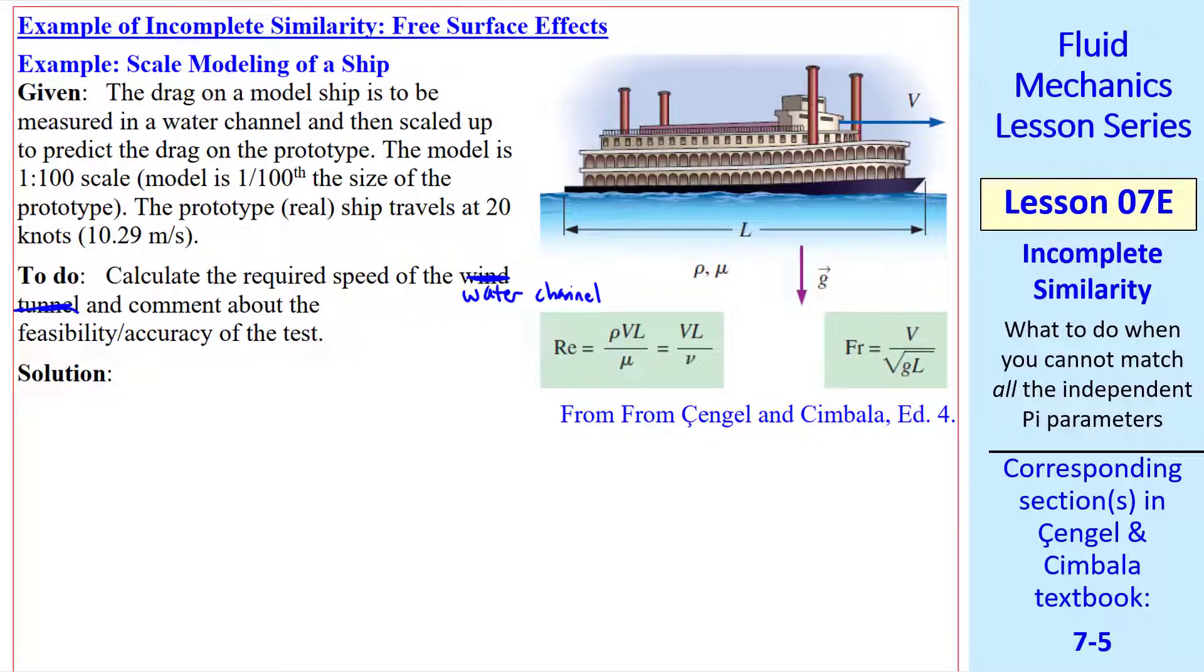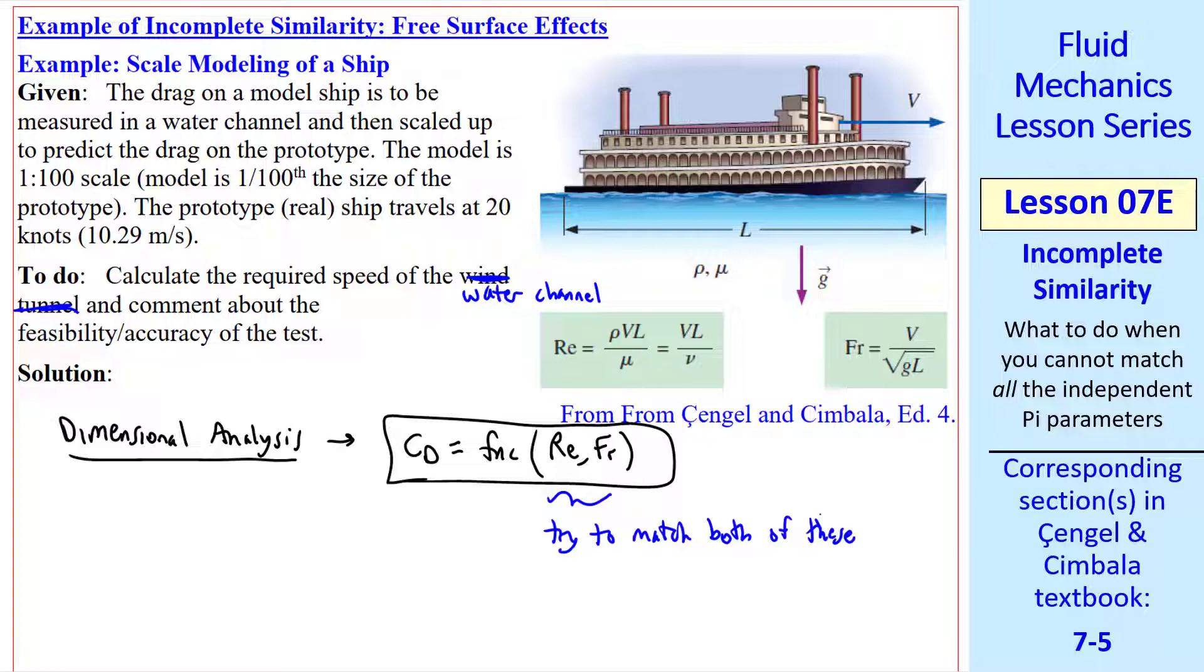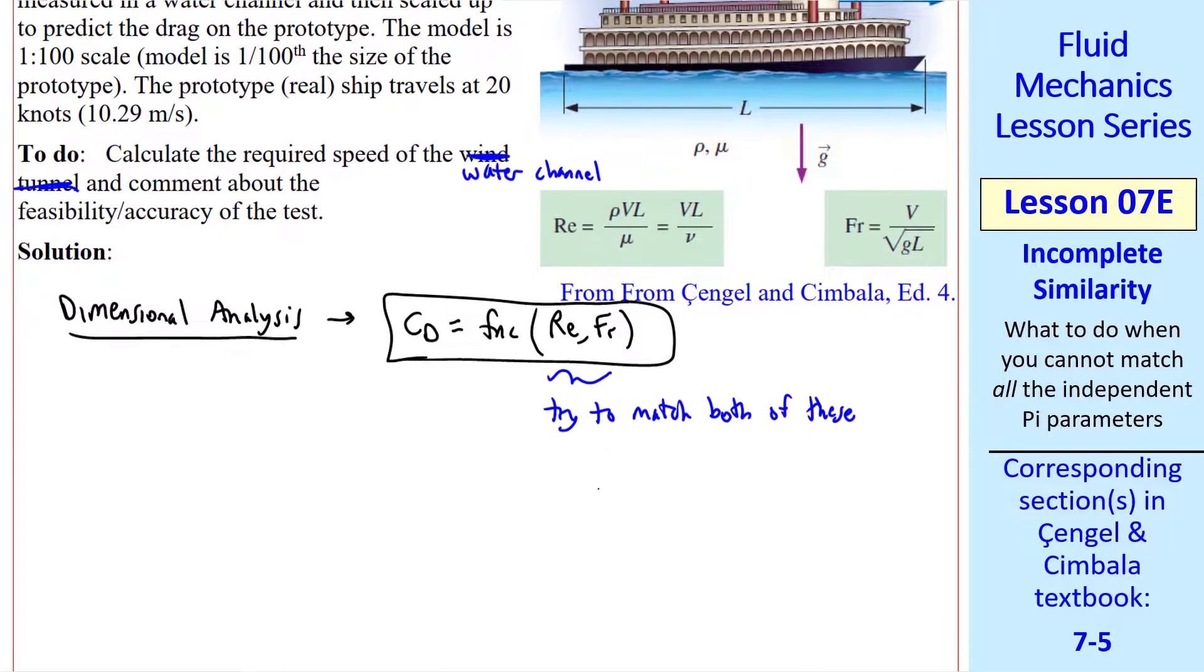Let's calculate the required speed of the water channel. When we perform our dimensional analysis, we have to include the magnitude of gravitational acceleration as an independent variable because of the wave drag experienced on a boat. You can try this one for practice. Just add g to our list of independent variables in our example problem from the previous lesson. And you'll get that CD is a function of Reynolds number and Froude number, where Froude number is speed over the square root of g*l. And we'll write Reynolds number as v*l over nu, since kinematic viscosity nu is mu over rho.